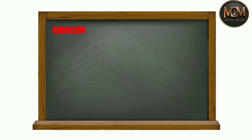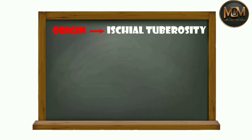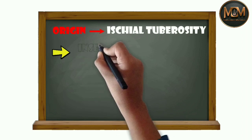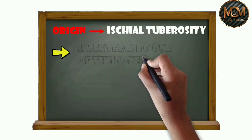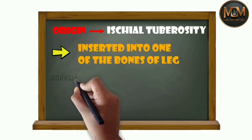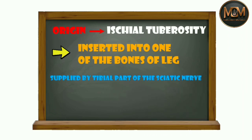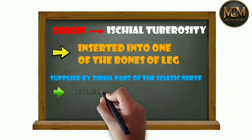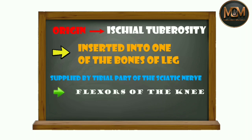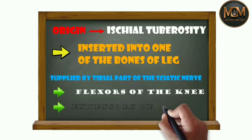They all share the same origin, which is the ischial tuberosity, and are inserted into one of the bones of the leg. They are all supplied by the tibial part of the sciatic nerve, and all are flexors of the knee and extensors of the hip.